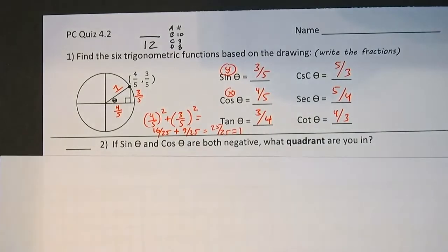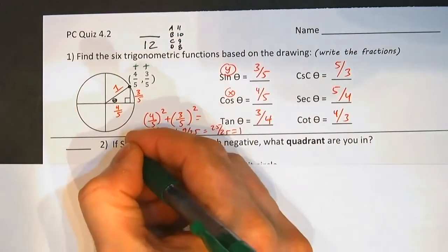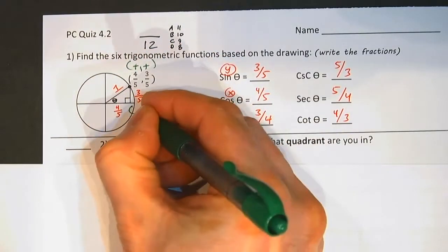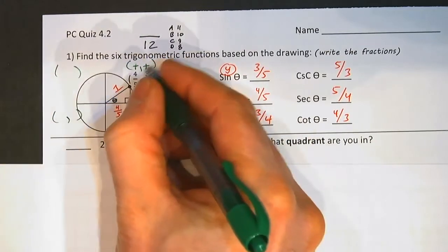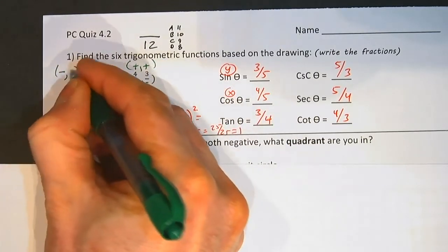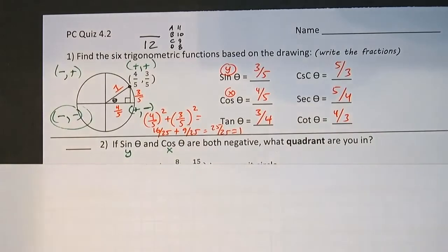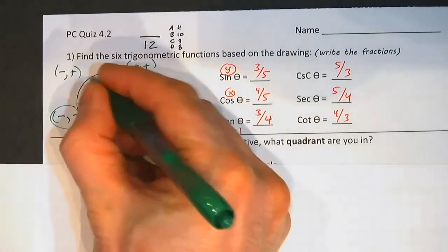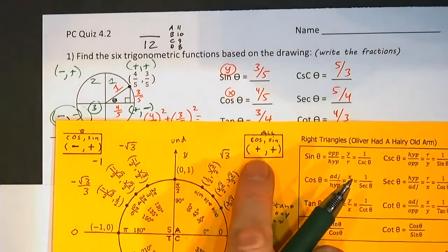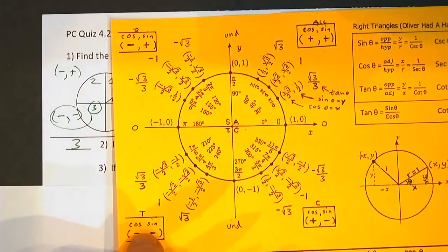Next one. If sine and cosine are both negative, what quadrant are you in? Let's see. These are both positive. Remember, sine is just y, cosine is just x. These are both positive. Down here we got over here. This is positive, so this is the x, positive but down. Over here, negative and positive, negative and up. And over here we're both negative, over and down. If they're both negative, over here, we must be in quadrant 1, 2, 3. We're in quadrant 3.